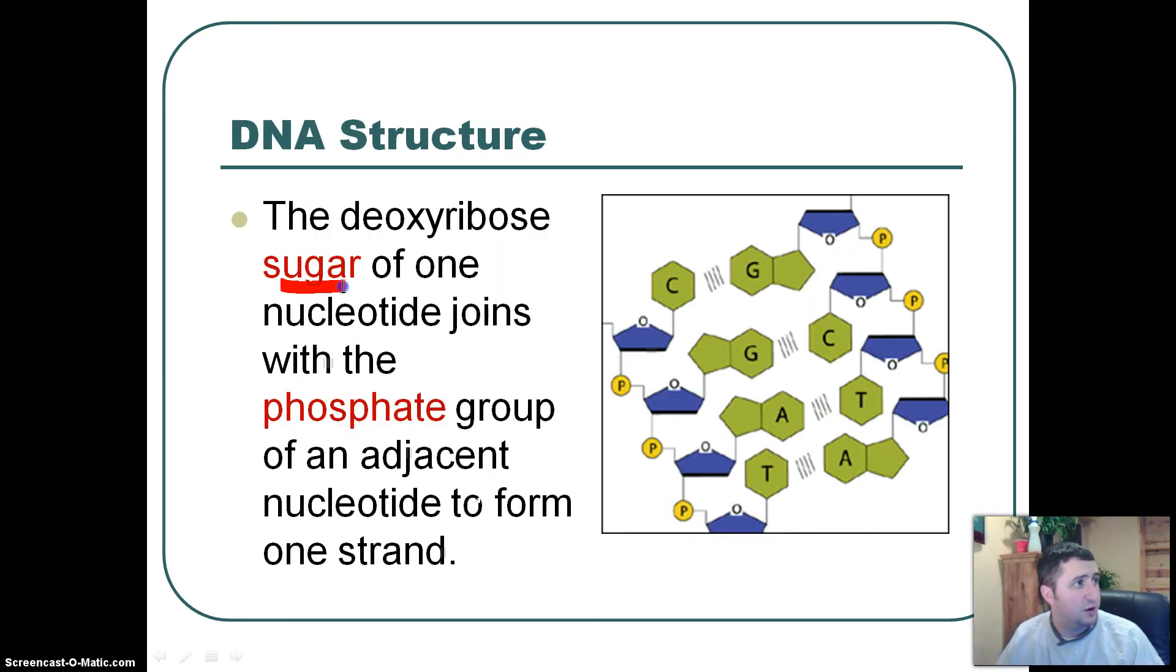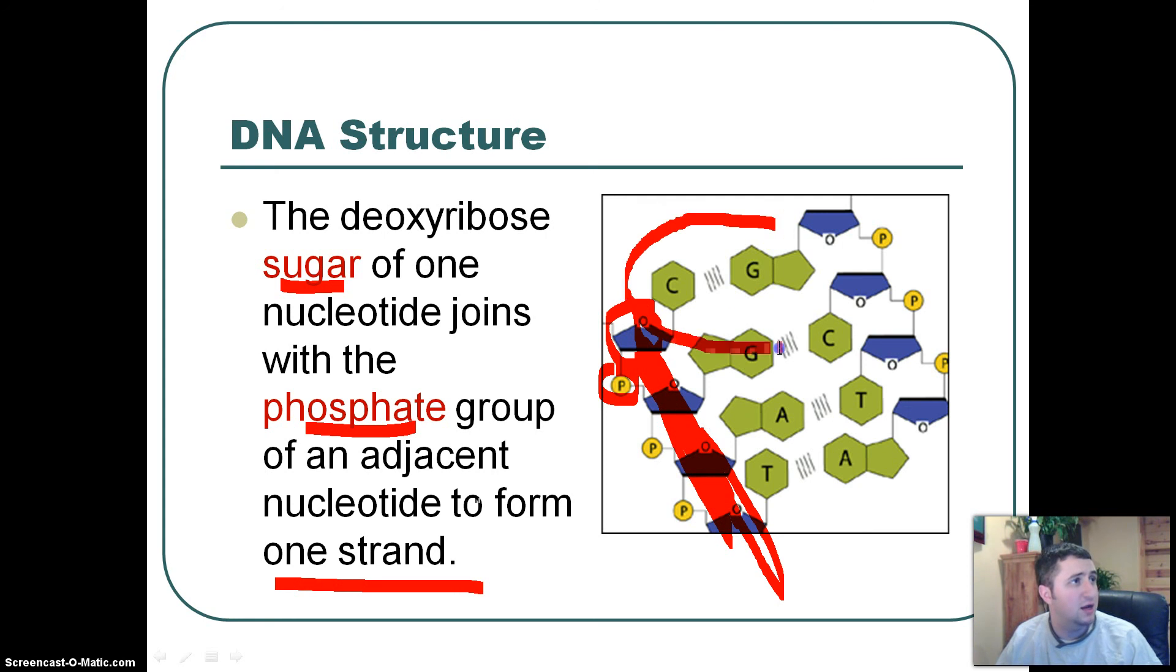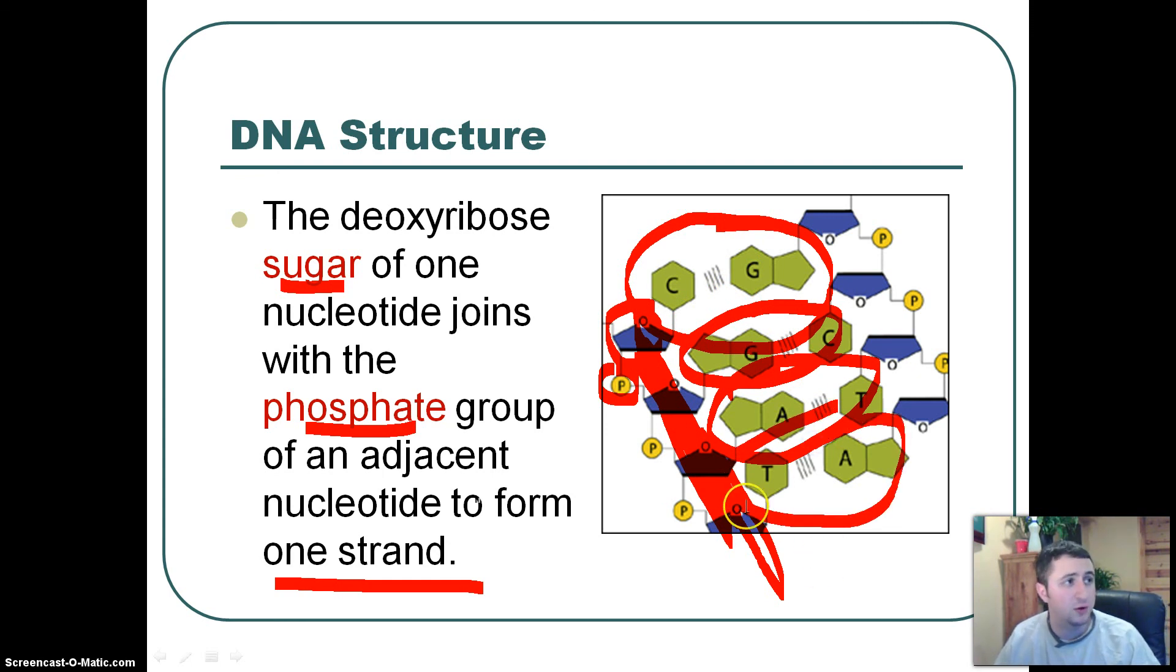So the deoxyribose sugar of one of the nucleotides joins with the phosphate group of the adjacent nucleotide to form one strand. So what does that all mean? Well here's the sugar that I'm circling, here's the phosphate group, and that forms the backbone, and all those bind together to form long strands, and right in here the nucleotides bind together to form different segments of DNA. Each one of these segments is going to be different just based on the simple order of everything.